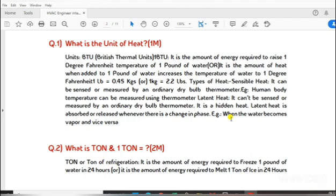Question 1: What is the unit of heat? 1 BTU is the amount of energy required to raise 1 degree Fahrenheit temperature of 1 pound of water, or it is the amount of heat when added to 1 pound of water increases the temperature of water to 1 degree Fahrenheit. 1 pound equals 0.45 kg or 1 kg equals 2.2 pounds.